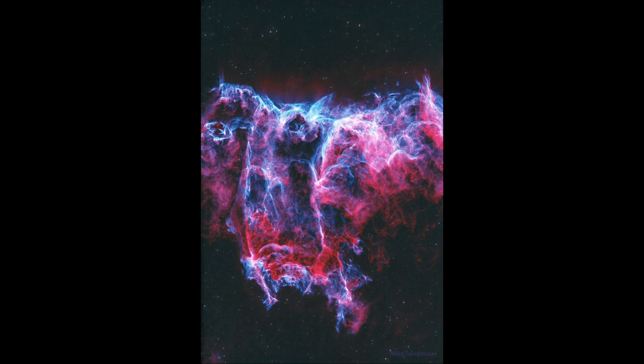The entire Veil Nebula covers about three degrees on the sky. To put that into perspective, our moon is about half of a degree, so is the sun. They're almost the same apparent size on the sky. So this is about six times the diameter of the full moon.